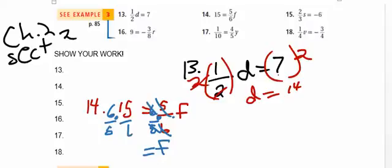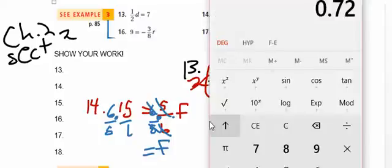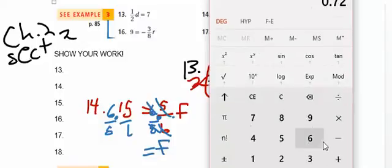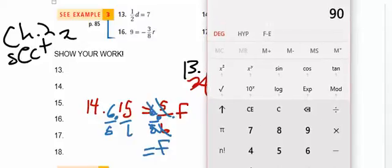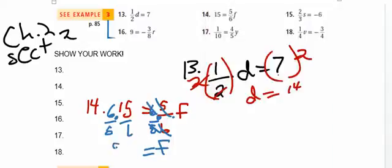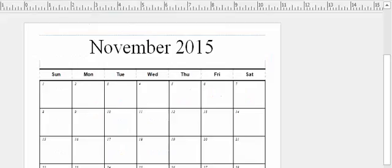If you're not used to canceling, then just go ahead and get your calculator. So I'm going to go 6 times 15 equals 90. And then 5 times 1 is 5. So I have 90 divided by 5.